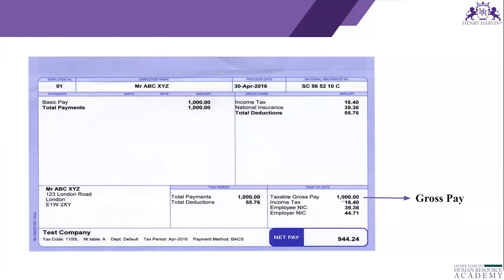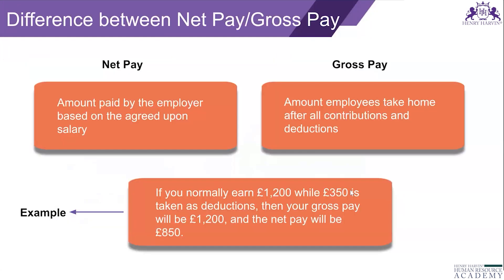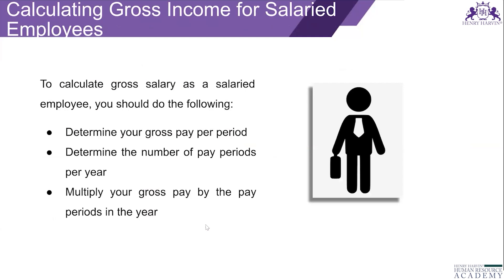This payslip format highlights how gross pay will look. Note: the print in this slide has a labelling error — net pay and gross pay labels are swapped. As a simple example: if an employee earns £1,200 and deductions are £350, the take-home is £850. So £1,200 is gross and £850 is net pay.